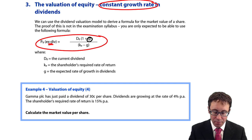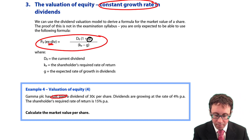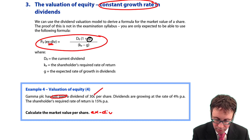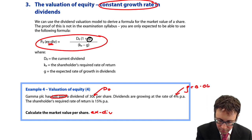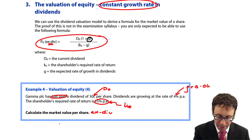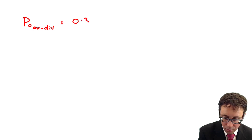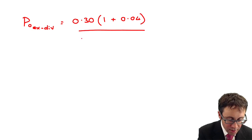The question wants us to calculate the market value per share. Here, we have just paid a dividend, so the market value per share is going to be ex-div. You have D0, your growth is 4% — remember to decimalise that as 0.04 — and KE is 15%. So what we need to do is work out P0 ex-div: the dividend is 0.3 multiplied by (1 + G), which is 0.04, divided by KE.